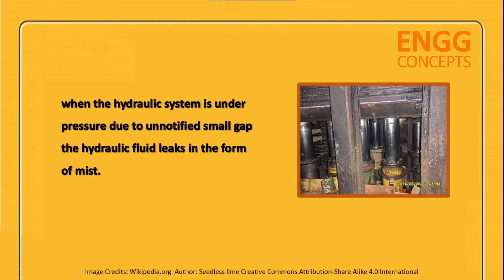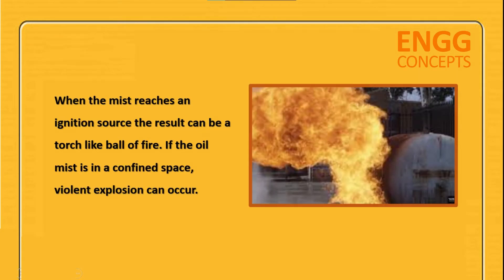Consider a scenario where a hydraulic component has a small gap due to wear and tear. Because of the small clearance, it would be hard to notice any leakage. When the hydraulic system is under pressure, the hydraulic fluid leaks in the form of mist. When this mist reaches an ignition source, the result can be a torch-like ball of fire. If the oil mist is in a confined space, a violent explosion can occur.